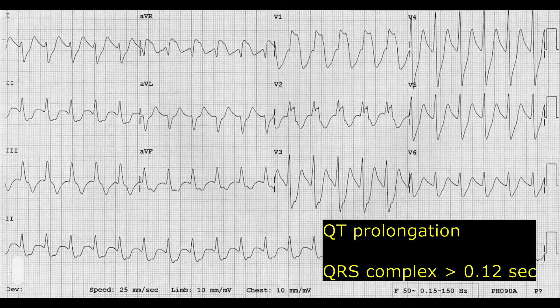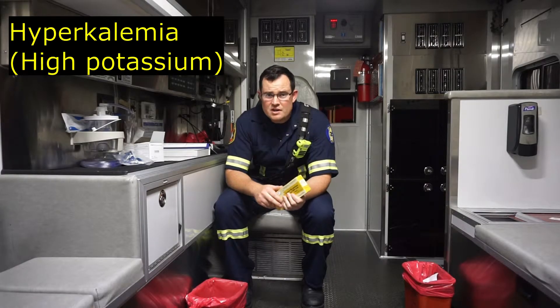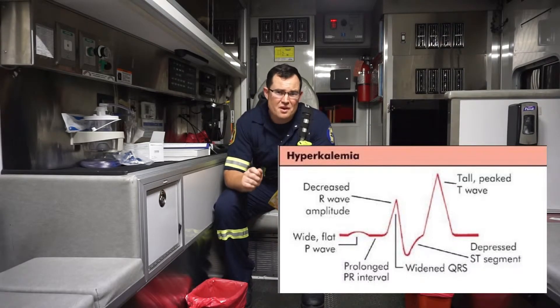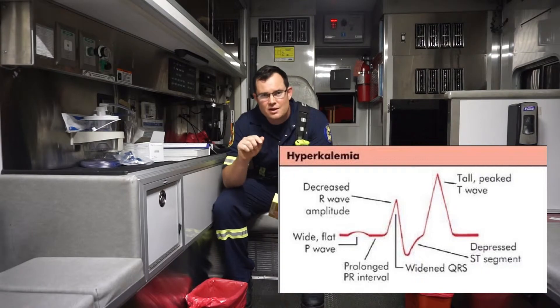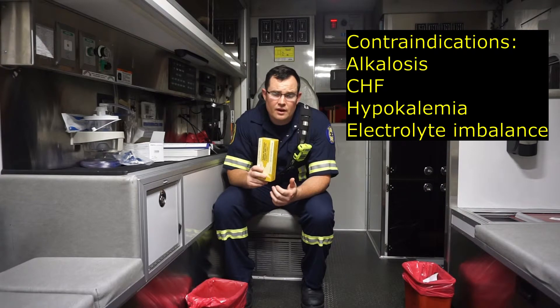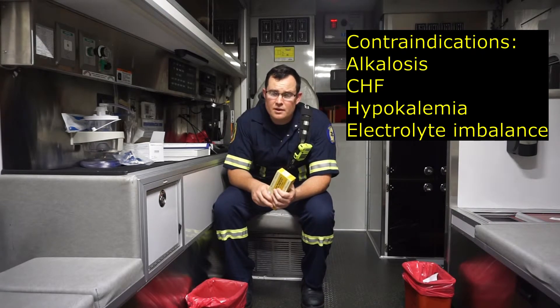On the EKG, note the potential for V-tach and QT prolongation. You'll utilize sodium bicarb if you see widening QRS complexes greater than 0.12 seconds. For hyperkalemia, look for peaked T waves and QRS complexes greater than 0.12 seconds.